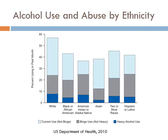Looking at alcohol use and abuse by ethnicity — percent using in the past month — white people have the highest current use, though binge drinking rates are comparatively lower. Heavy alcohol use is also higher among white groups than other groups. Among American Indians, overall use is among the lowest; however, binge use is still among the highest, meaning fewer people use alcohol, but among those who do, the use is heavier.